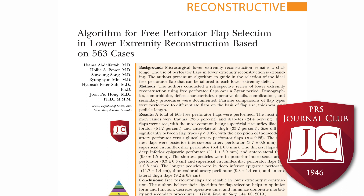The authors discuss each factor and in which scenarios they would choose certain flaps. The SCIP and ALT flaps predominated in their series because 92% of patients were done supine. For smaller to medium-sized flaps they tended to do a SCIP, and for larger flaps an ALT. Understanding that the patient population in Seoul, Korea is different from the Midwest — where patient BMIs are higher — I still think it's a very interesting paper demonstrating a large experience with lower extremity perforator flaps.